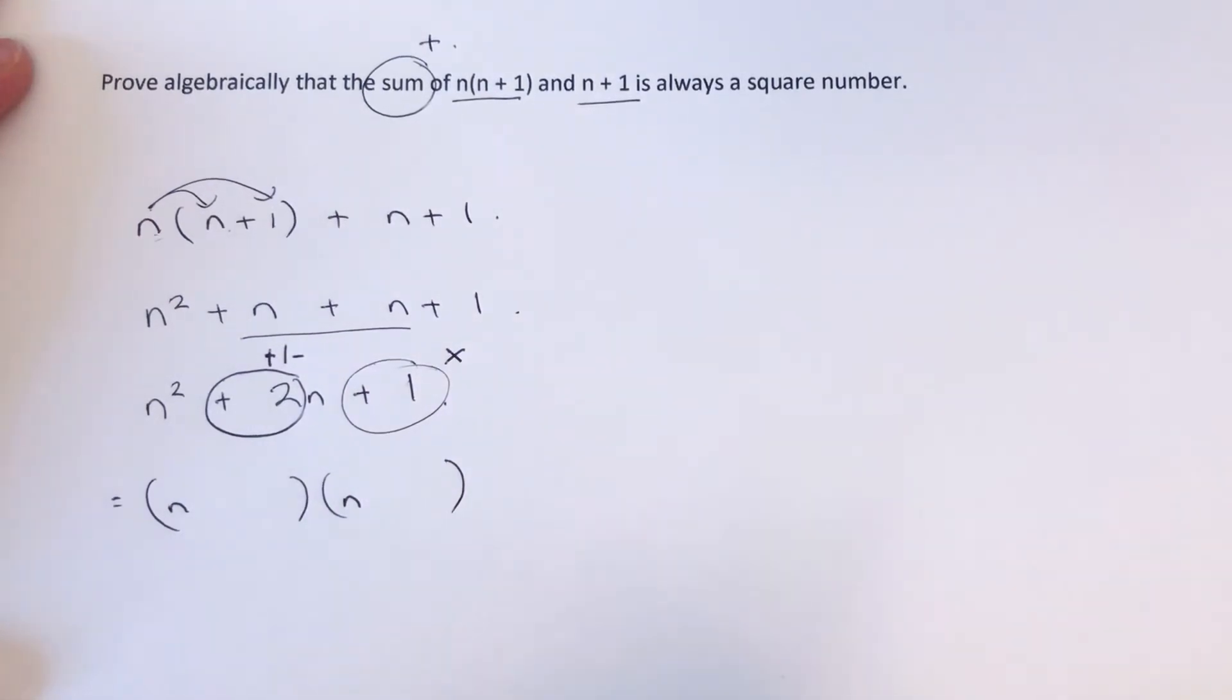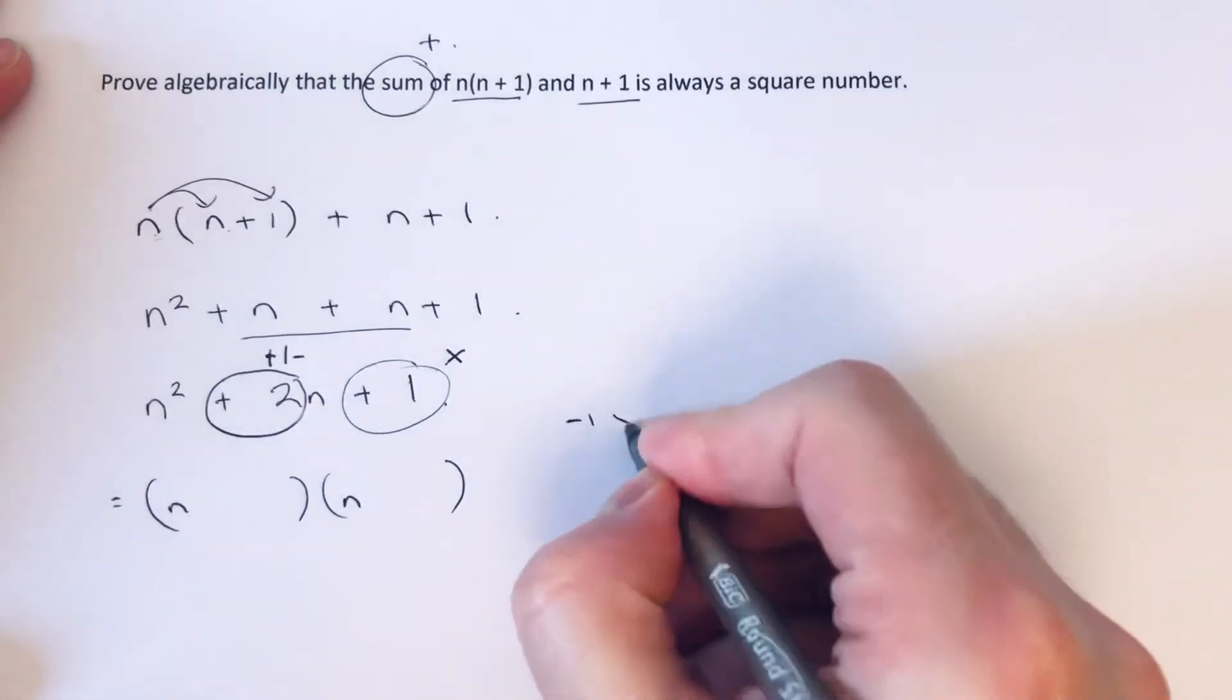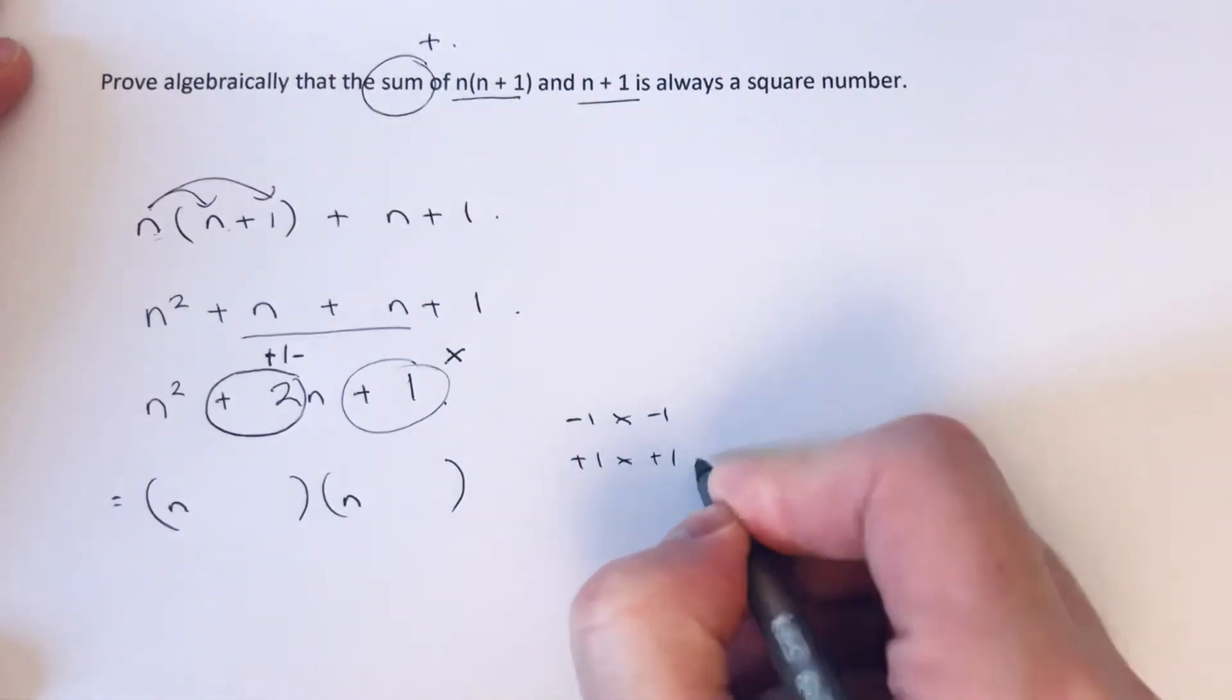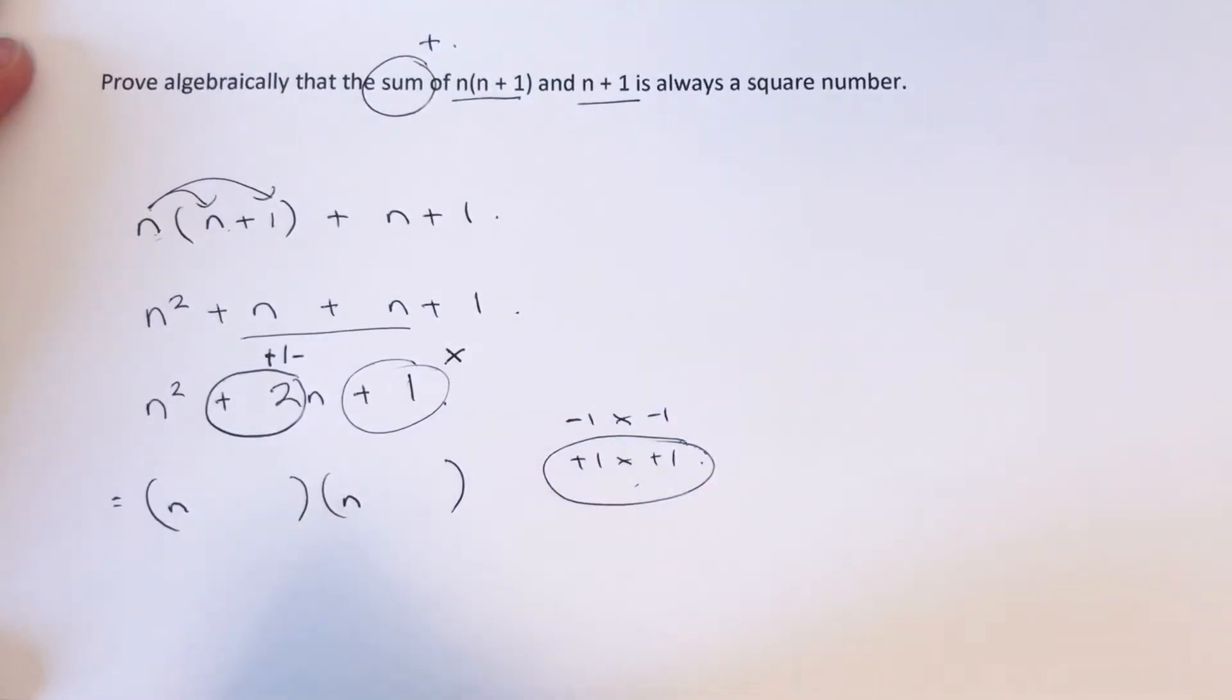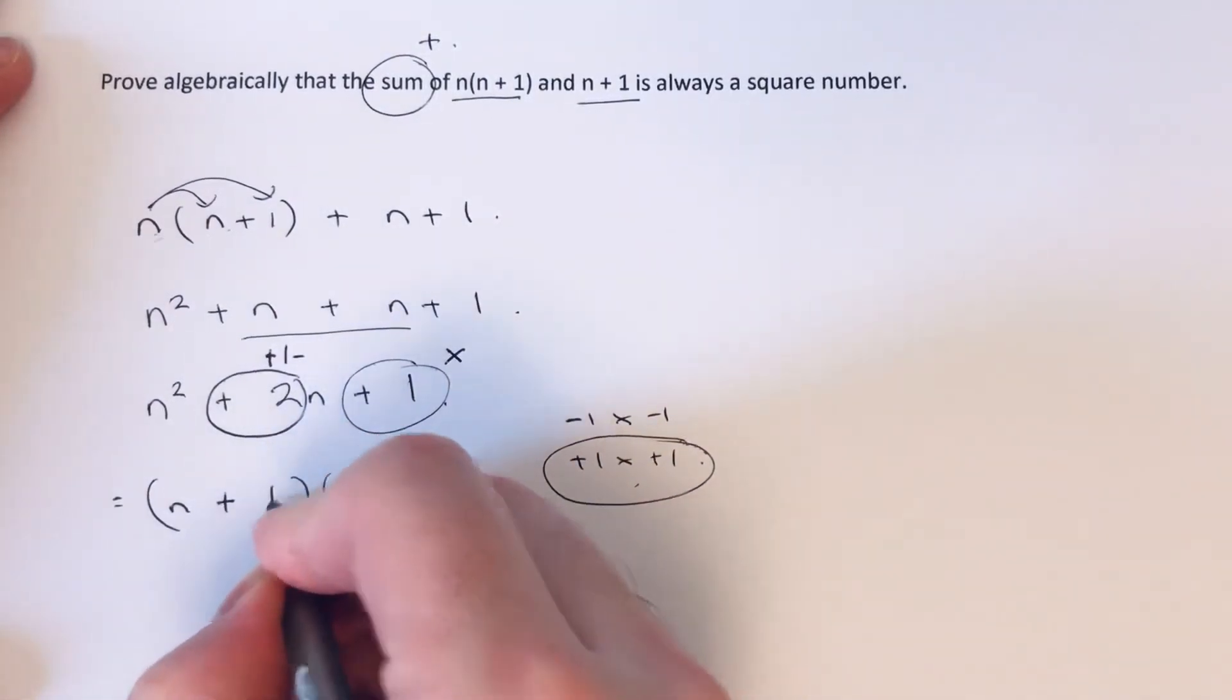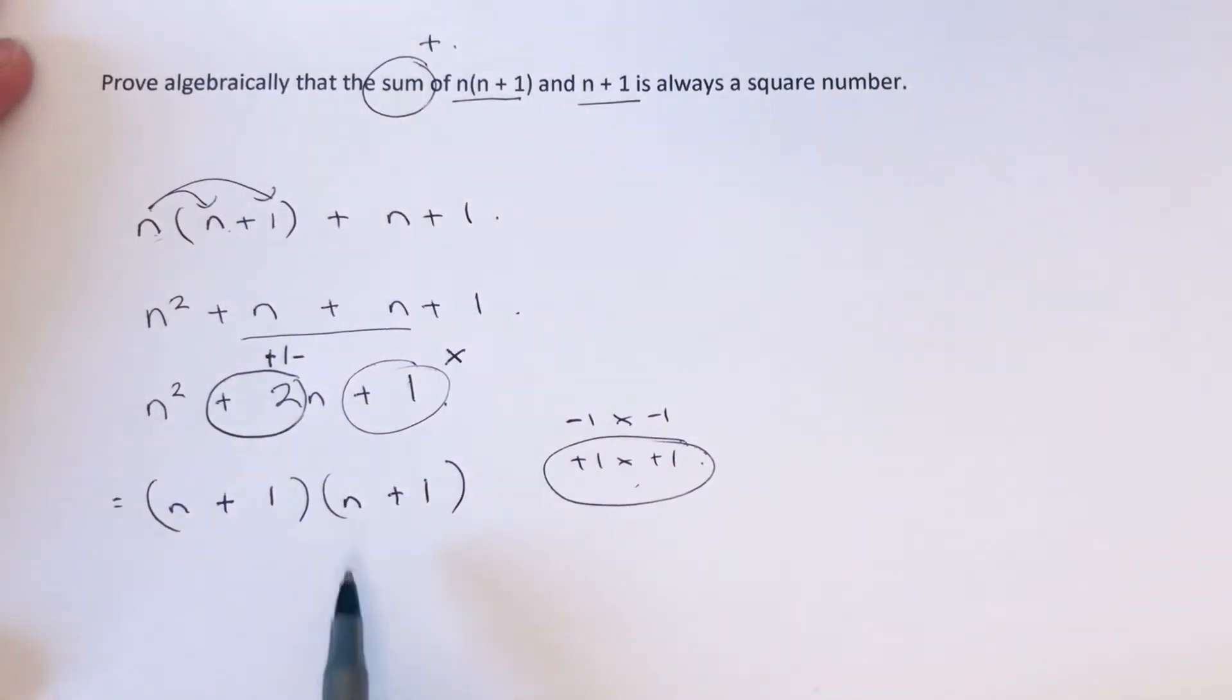So the one that gives us plus 2 is the second one, so we put these numbers here. What we have is the same two terms in each of the brackets.